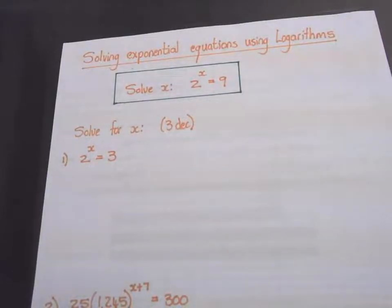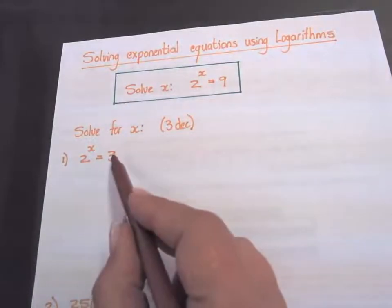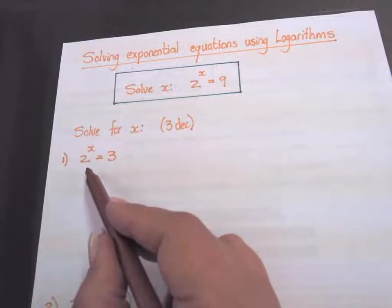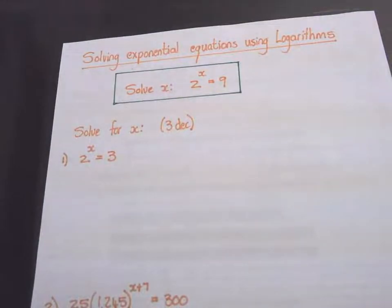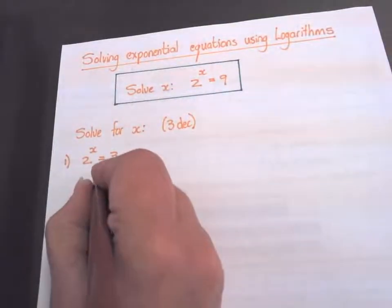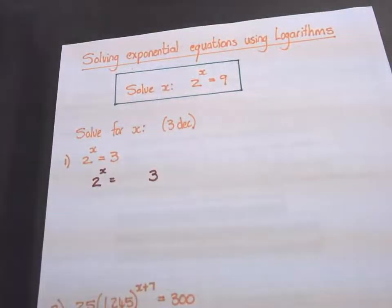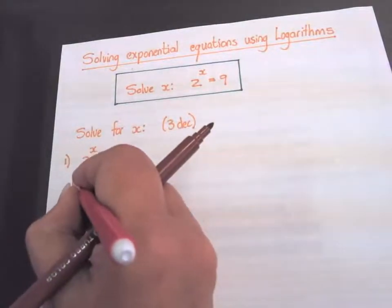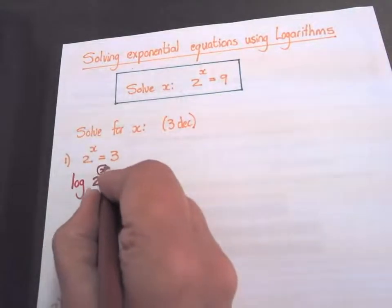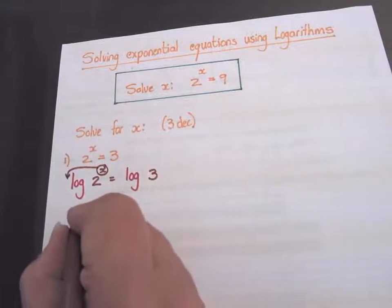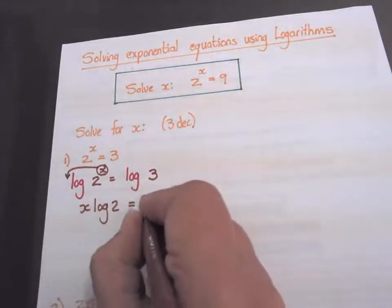Now you can only use the definition to say 2 to the power of log 3 base 2 equals x and then type it in your calculator. But I'm going to show you a different way that you can use to solve for x in this equation. The first thing that you do is we are going to put in logs, so a log in front and a log in front. Then I'm going to use one of the laws saying if you have an exponent it goes to the front of the log. So x log 2 equals log 3.